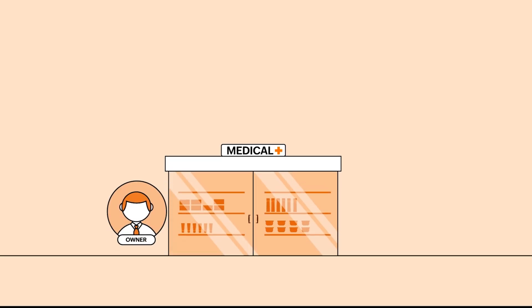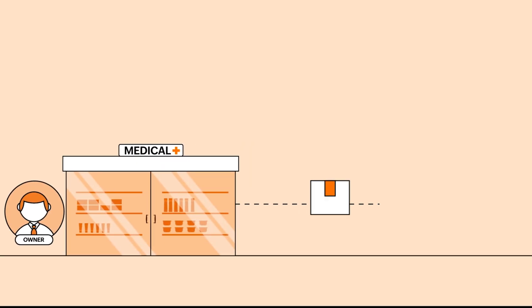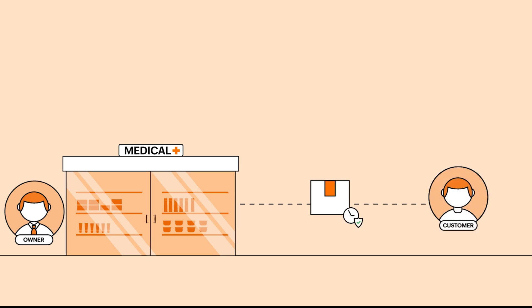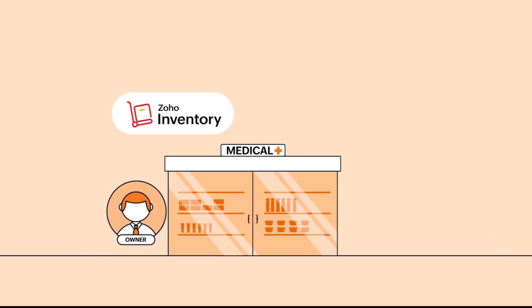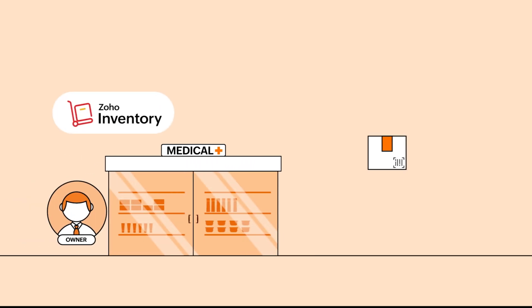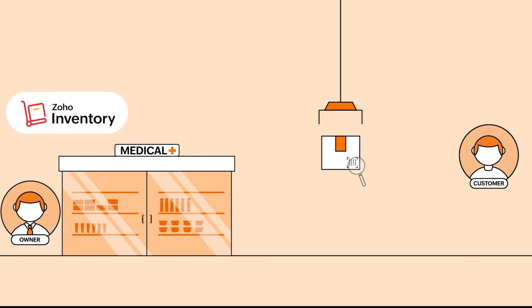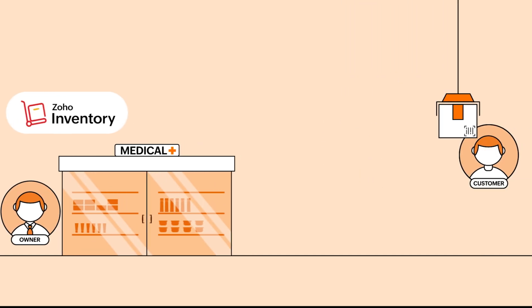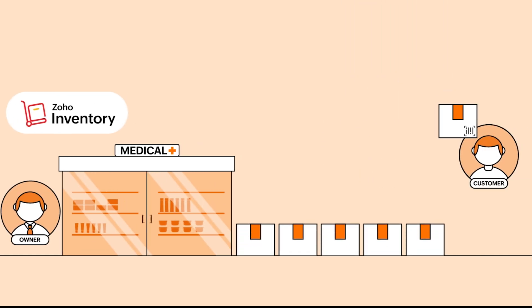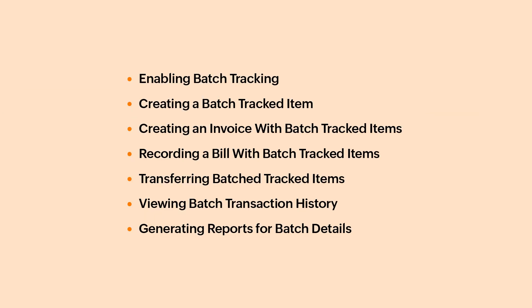Imagine you are the owner of a medical store. You will have to ensure that your customers receive products within their safe usage period. With Zoho Inventory's batch tracking feature, you can selectively pick items to give to customers from batches that fall within their recommended usage dates and ensure that products meet their quality standards. In this video, we will learn all about it.